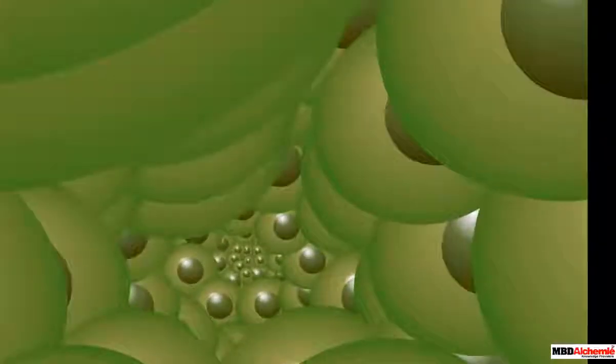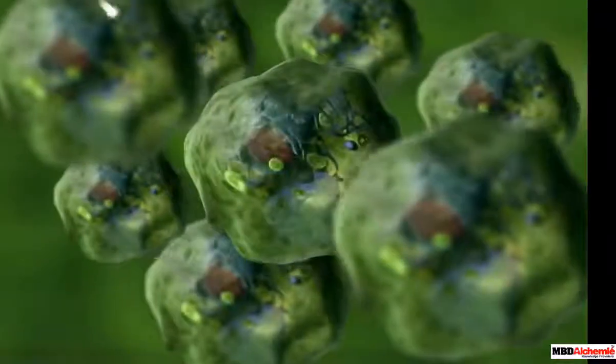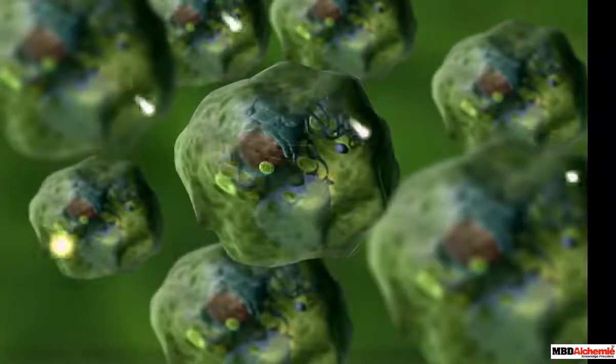Photosynthesis consists of two sets of reactions, the light-dependent reactions and the Calvin cycle.